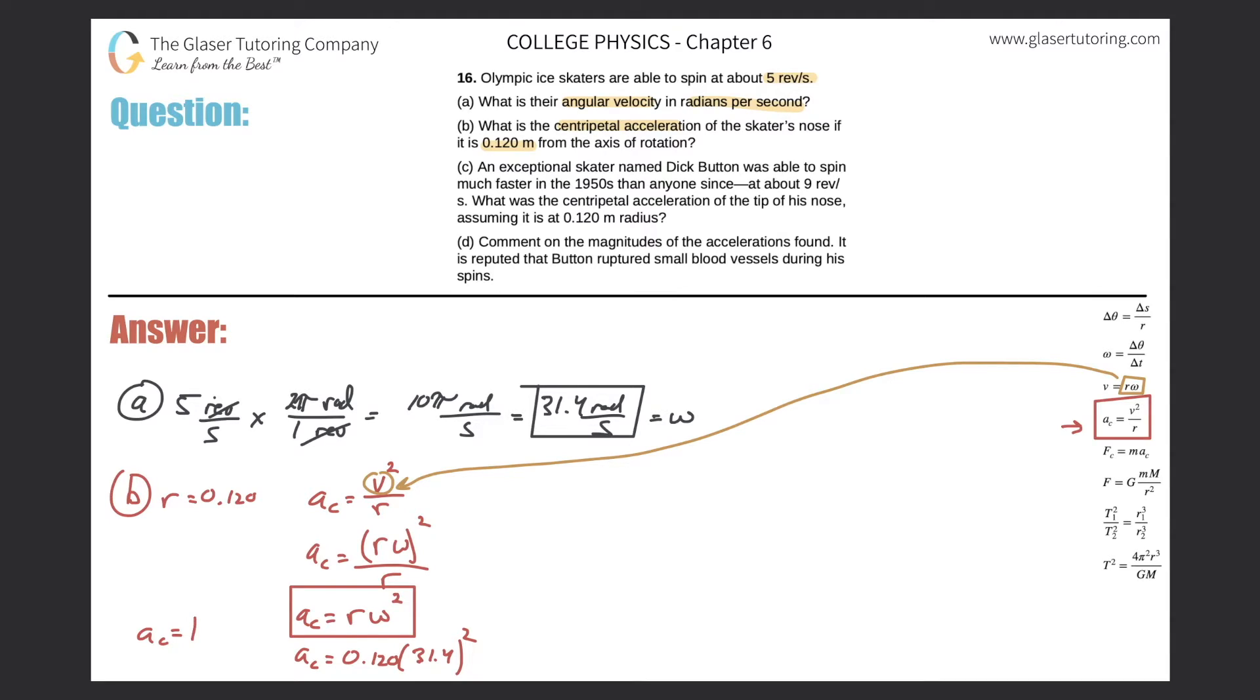So simply now the centripetal acceleration will be 31.4 squared times 0.12, so 118 meters per second squared. That is the answer. So that takes care of letter B.